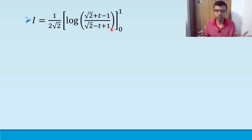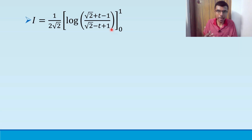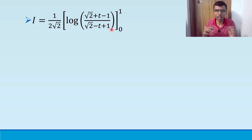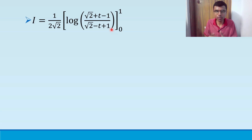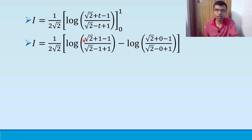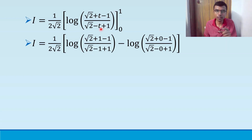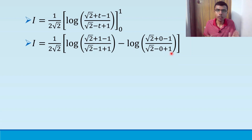Remember: either use it or lose it. This knowledge stays with you only if you practice. Please make notes and if you have doubts, mention them in the comments with the timestamp so I can help you. Now let's substitute the limits. For the upper limit, put t = 1; for the lower limit, put t = 0.